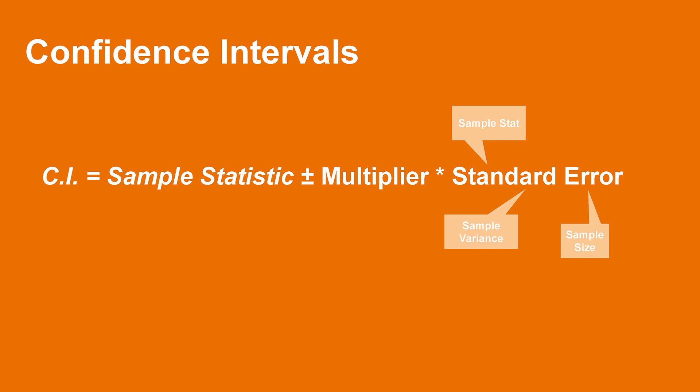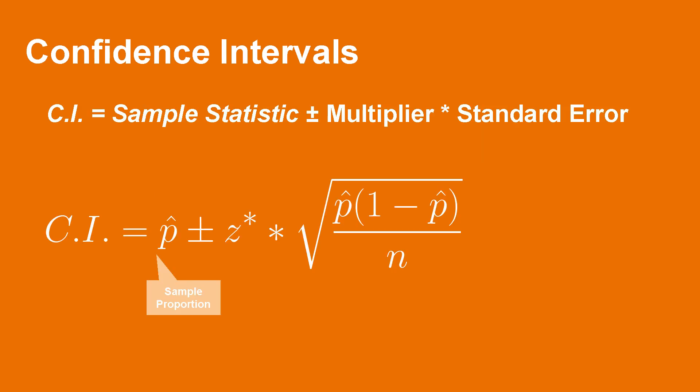For a single population proportion, we can adjust the structure until we get that this confidence interval is equal to the sample proportion, plus or minus the z multiplier derived from the standard normal distribution, times the standard error. The standard error in this case is equal to the square root of the sample proportion times one minus the sample proportion divided by the sample size.